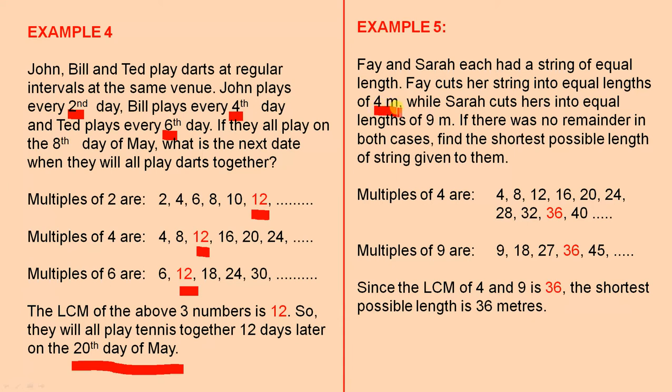So, we have four metre lengths here for Faye, nine metre lengths for Sarah, that's after they cut their original string. So, let's find the multiples of four, which are these numbers. The multiples of nine are these numbers.